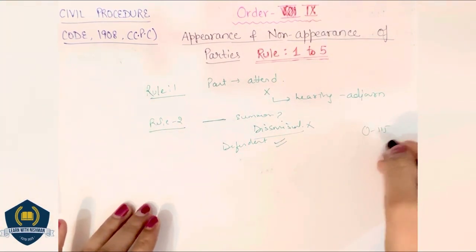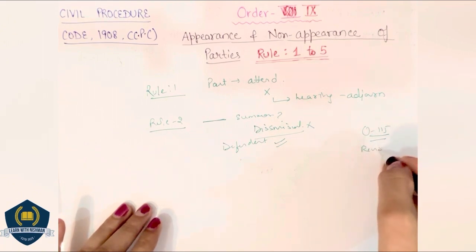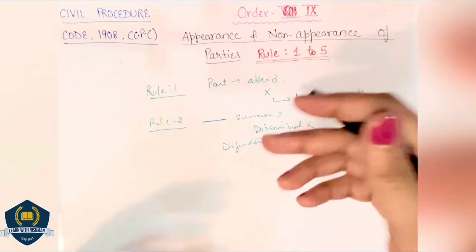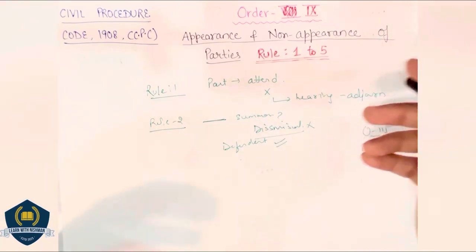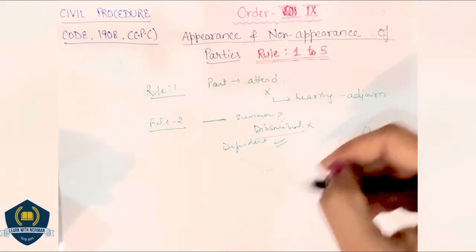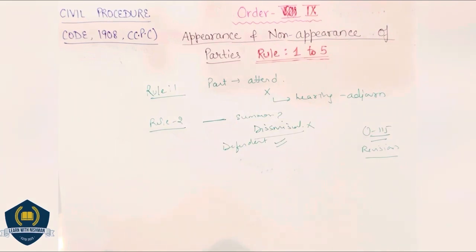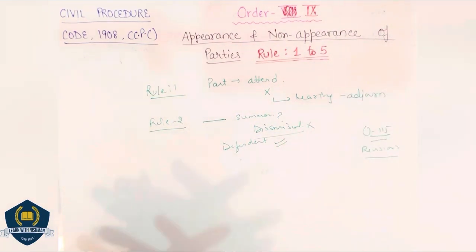Order 115 is very very important, जो कि related है revision से। तो यहाँ पर जो party इस चीज के लिए appeal करना चाहती है कि although summon नहीं पहुँचा था और suit का dismissal होने ही वाला था, लेकिन defendant आ गया तो suit की hearing हुई — इस बात को आप appeal नहीं कर सकते, but yes, you can go for revision under Order 115.